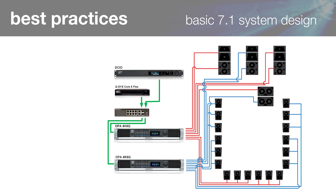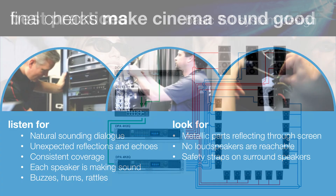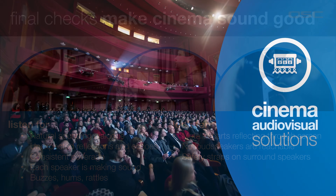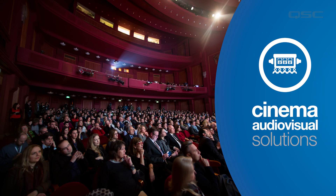Once the products are selected and the system is designed, installed, and calibrated, it's time for commissioning and final checking. Always play some familiar content and walk around the entire room. Listen to every loudspeaker — listen for even coverage around the room, for reflections and echoes, and for noises that shouldn't be there like buzzes and rattles. Look for any bright metallic surfaces from construction materials or light sources through the perforations of the screen. We realize that any room not designed as a purpose-built cinema will present inherent challenges, but the closer you can get to these guidelines, the better overall audio and visual experience you'll be able to deliver.